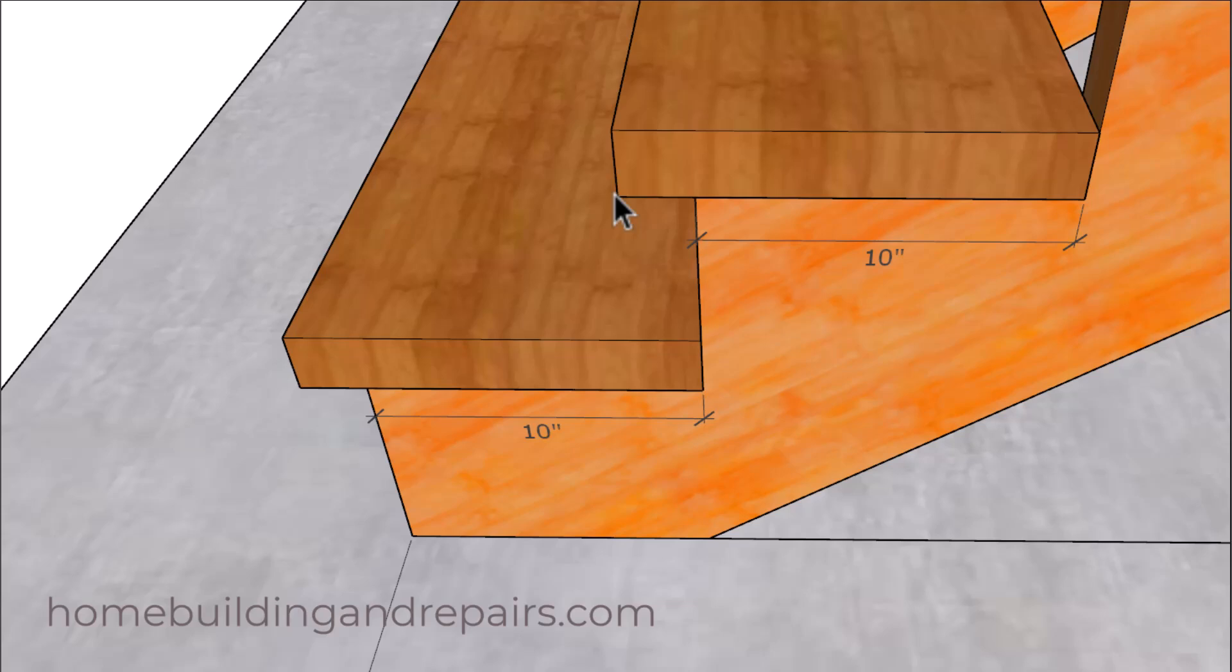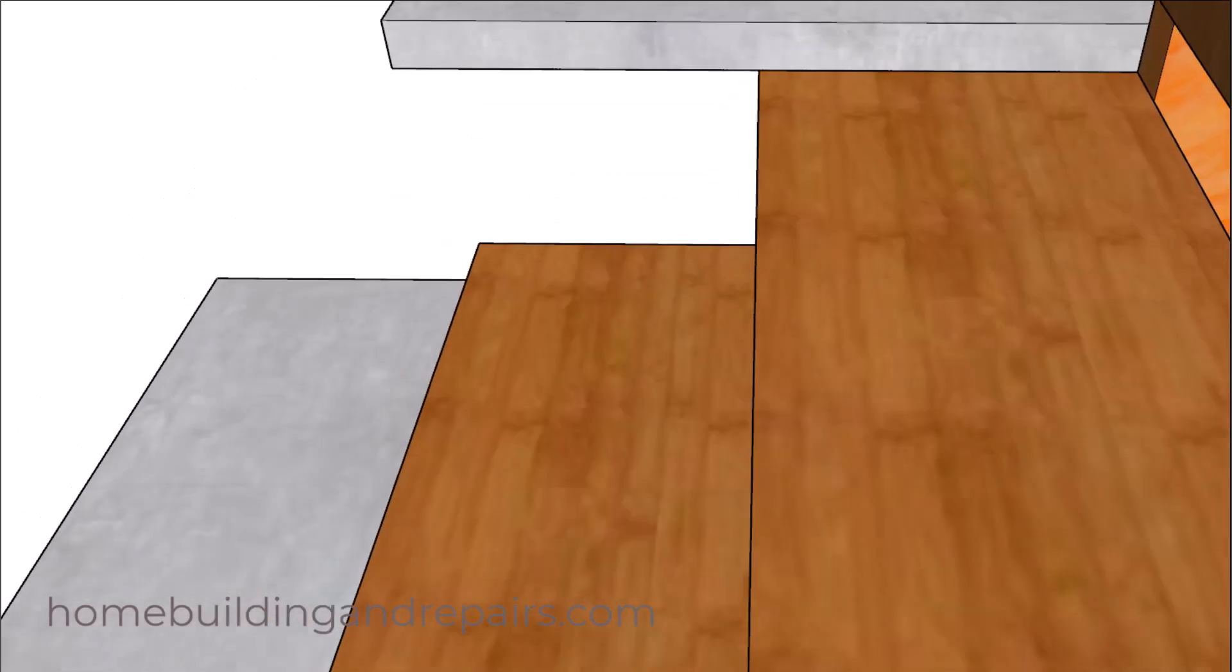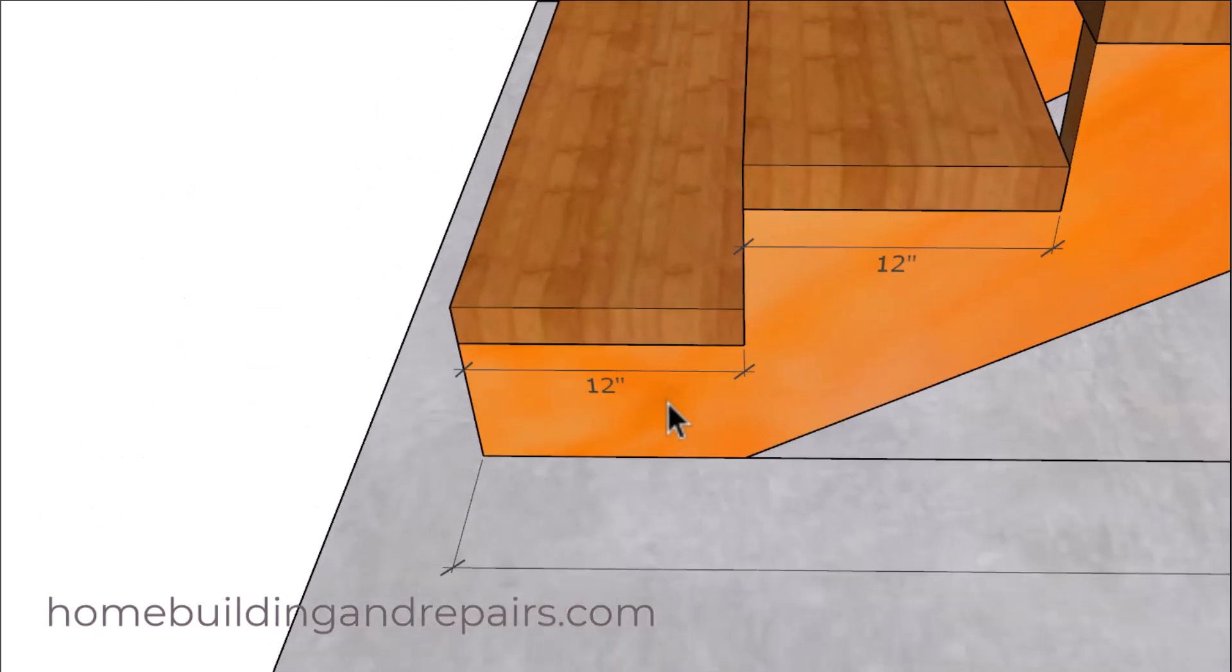Now most building codes have a maximum for the nosing. I believe that's about an inch and a quarter. So this stairway wouldn't meet most local building codes. However, this one will, because we have a 12 inch tread, the minimum is 10 inches.